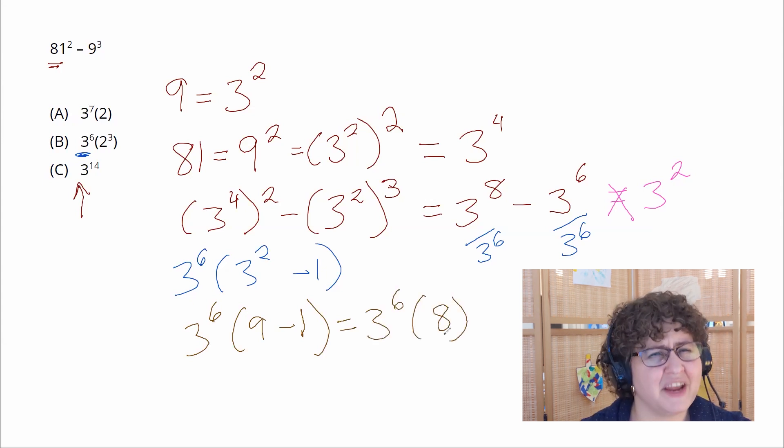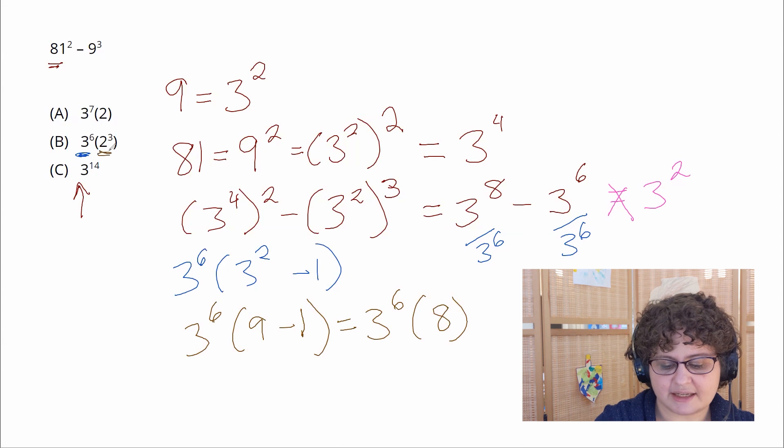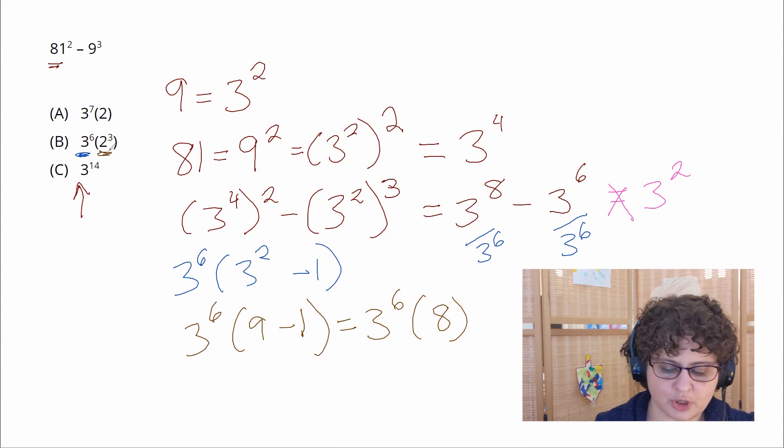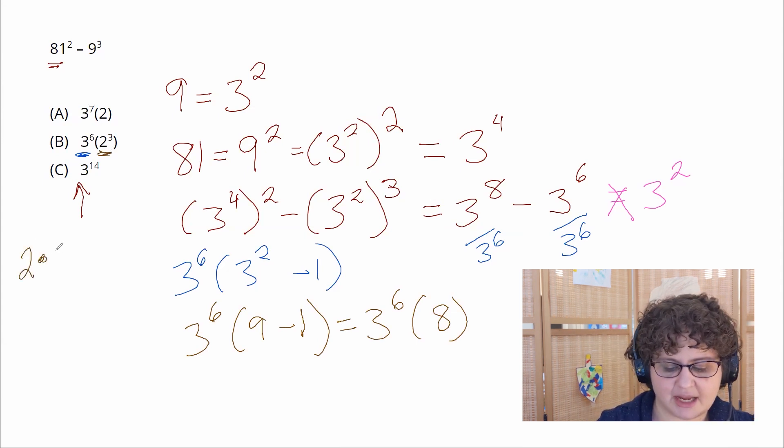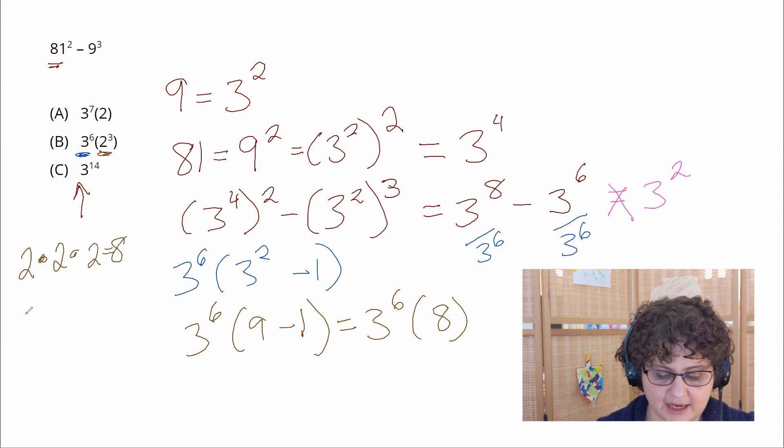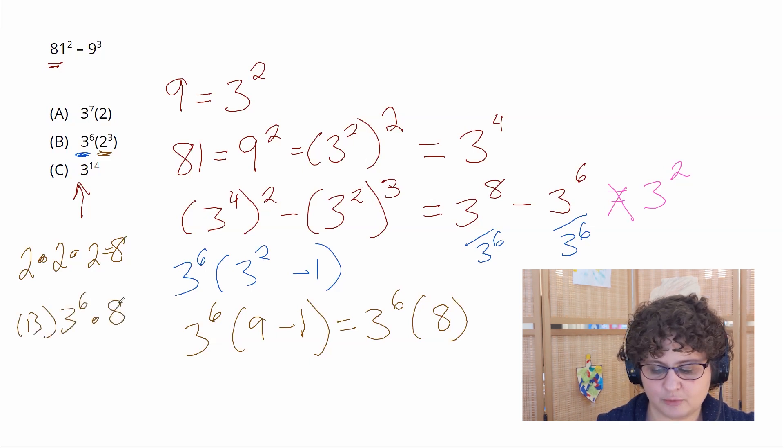Again very close to our answer choice but not identical. Take a look at what the answer choice actually says. It's 3 to the sixth times 2 cubed. Well 2 cubed is the same thing as 2 times 2 times 2 which is 8. So what answer choice B is really saying is 3 to the sixth times 8 which we just determined is our answer.